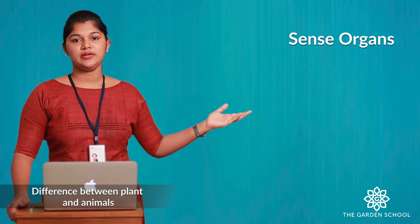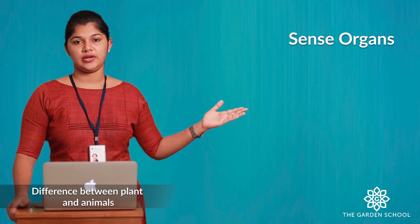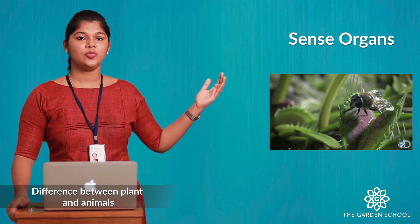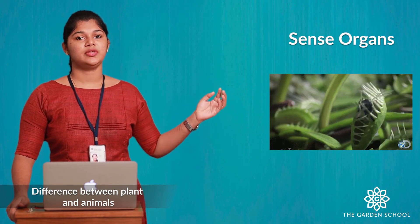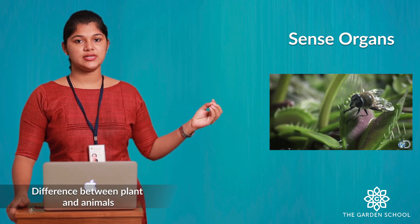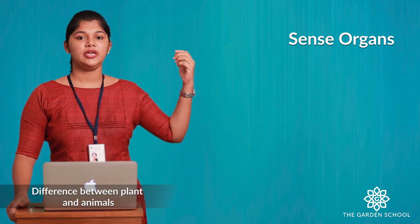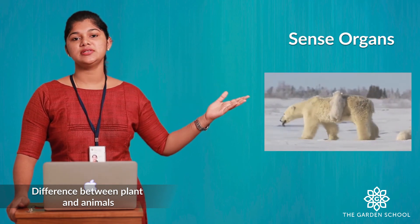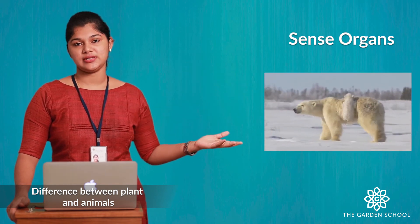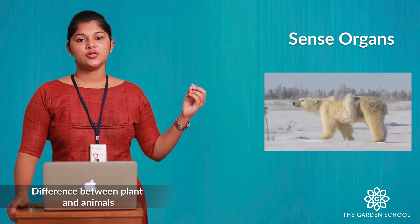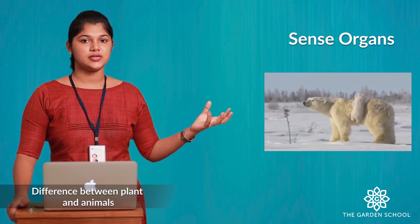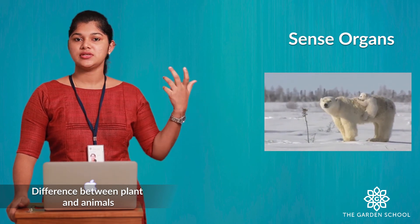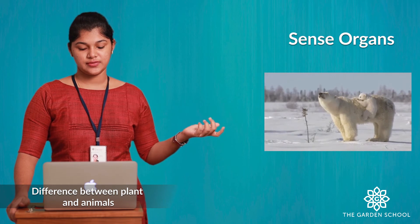The next difference is sense organs. In plants you can observe basic sense organs like touch. But animals are highly sensible and can easily react to their surroundings.